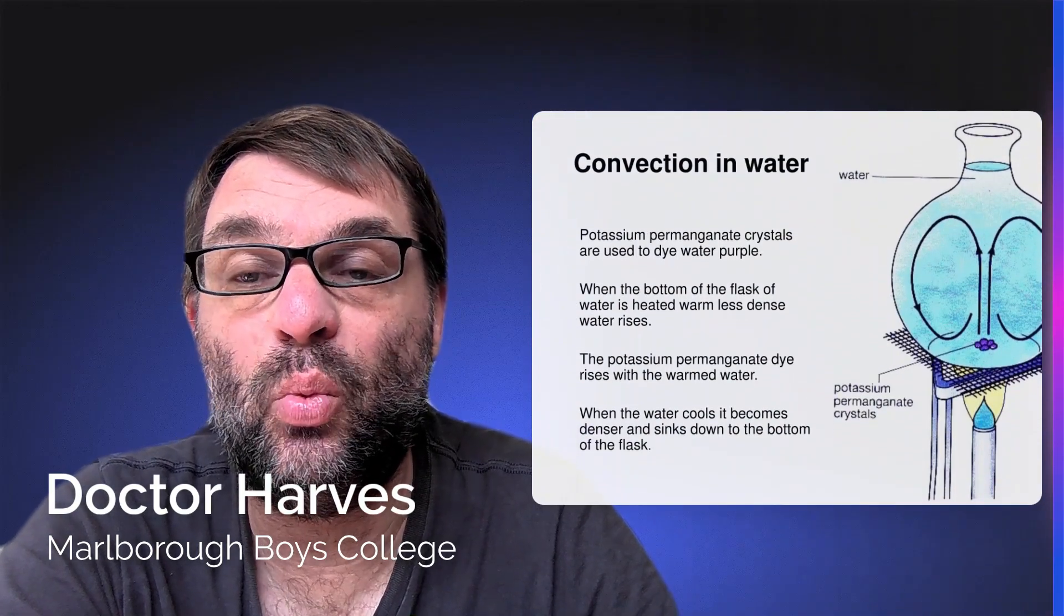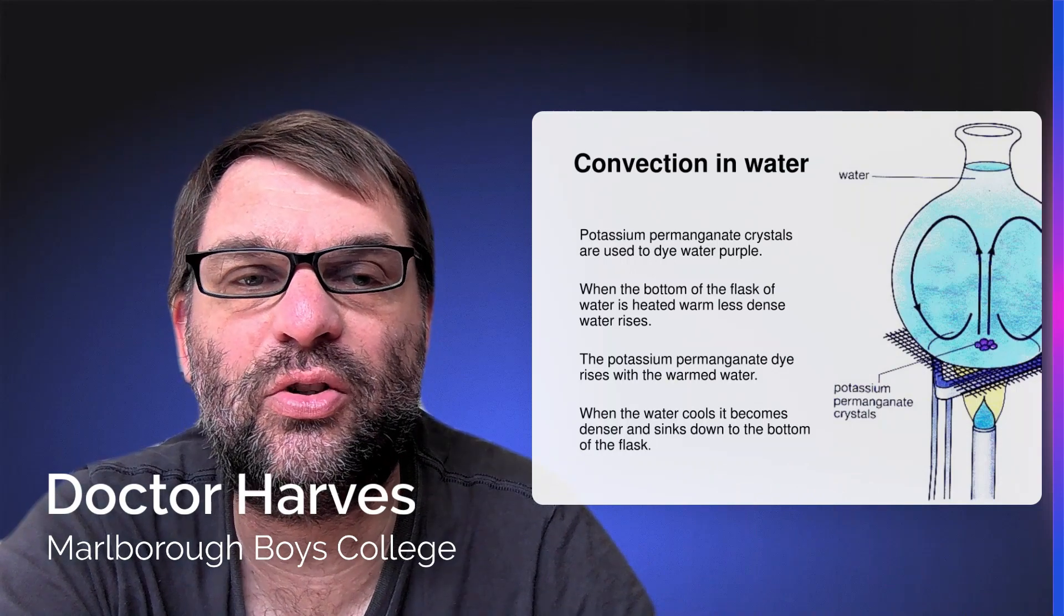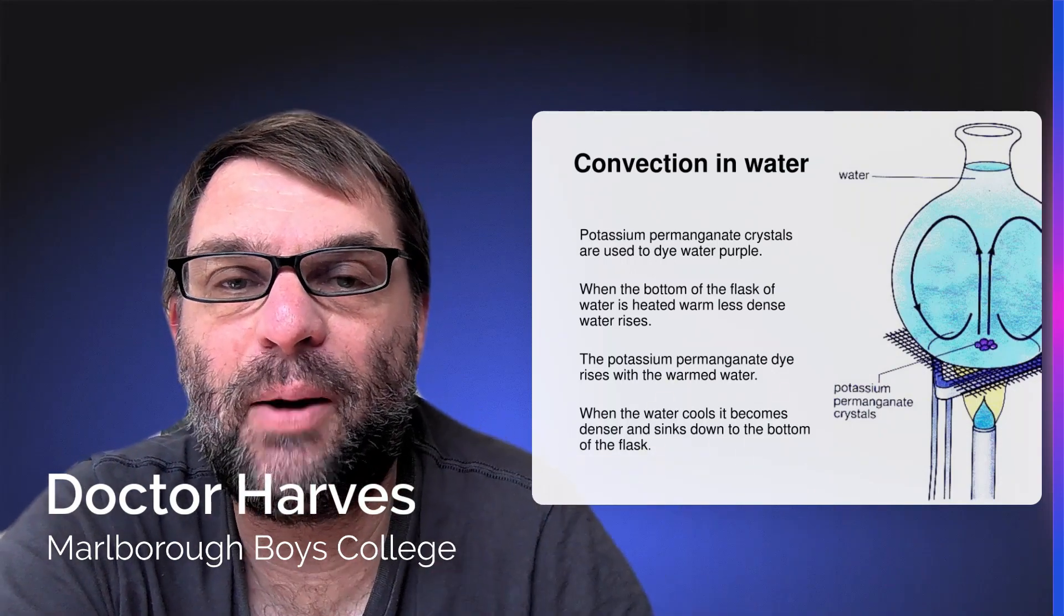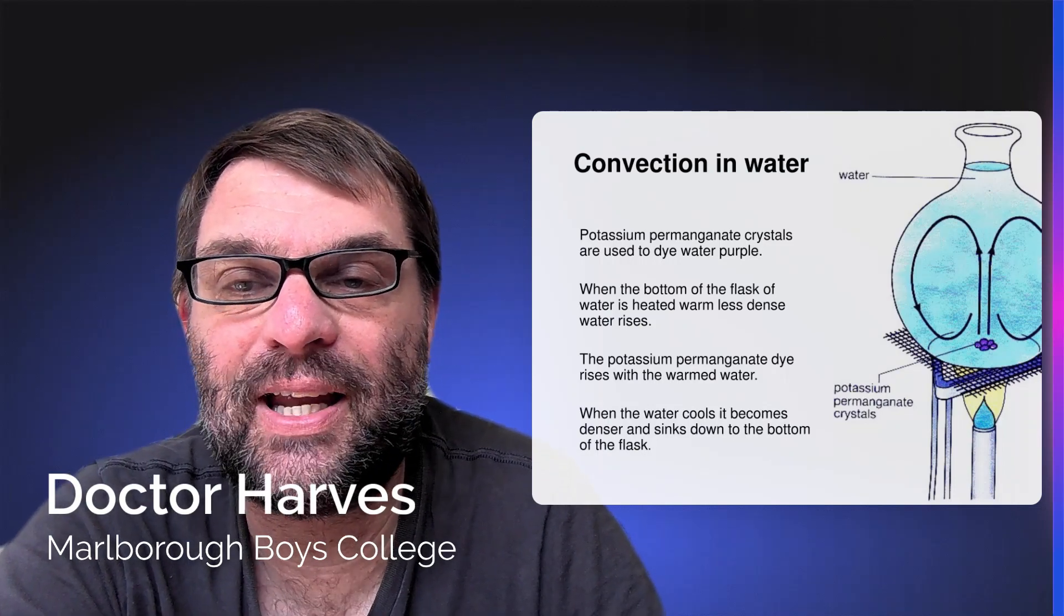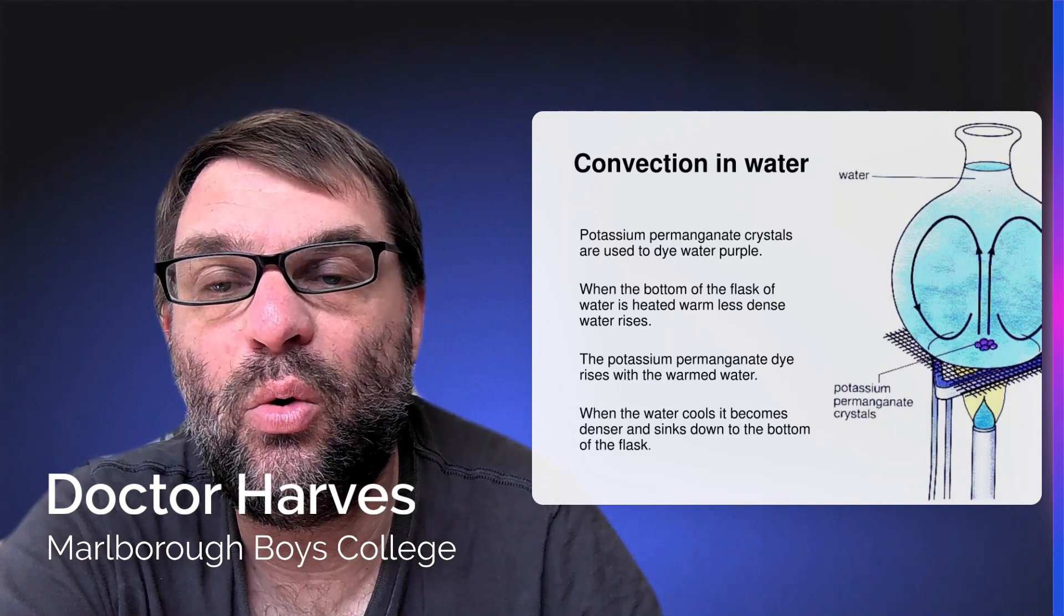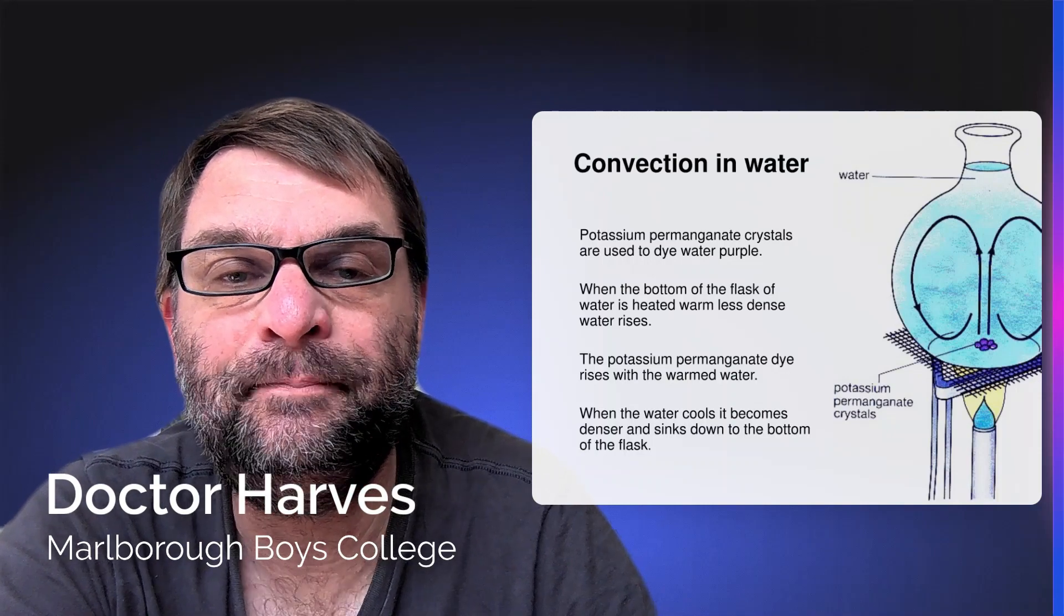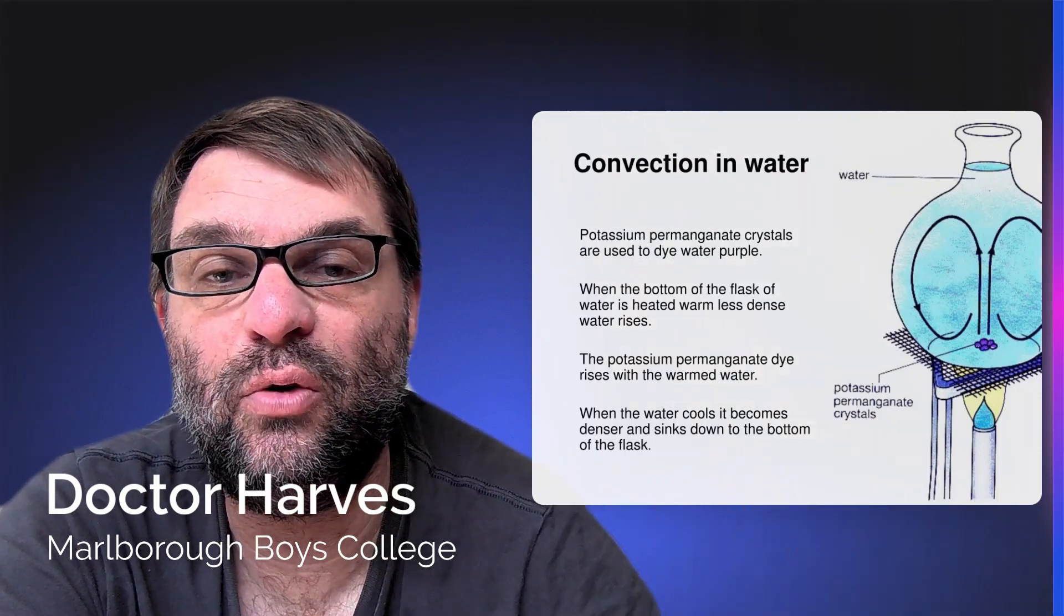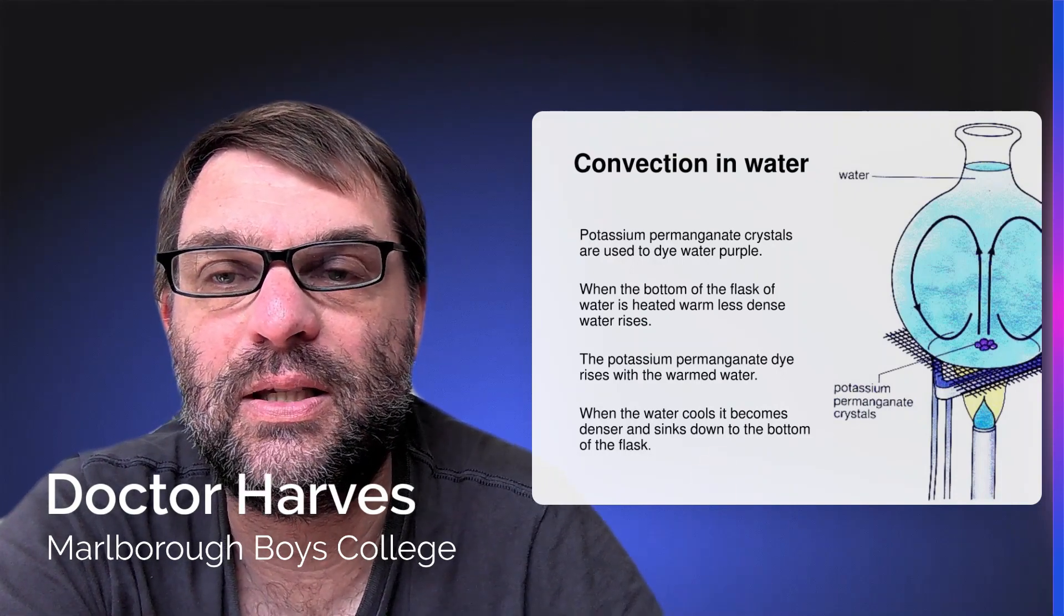We also see this in water, which of course is a fluid. If you put potassium permanganate crystals at the bottom of a beaker and then slowly heat that beaker up with a Bunsen burner, you will see that the potassium permanganate dye or crystals basically rise with the warm water from the bottom of the beaker. Then as the water cools down at the top, they begin to fall down again to the bottom of the flask where they get heated again and the cycle begins yet again.